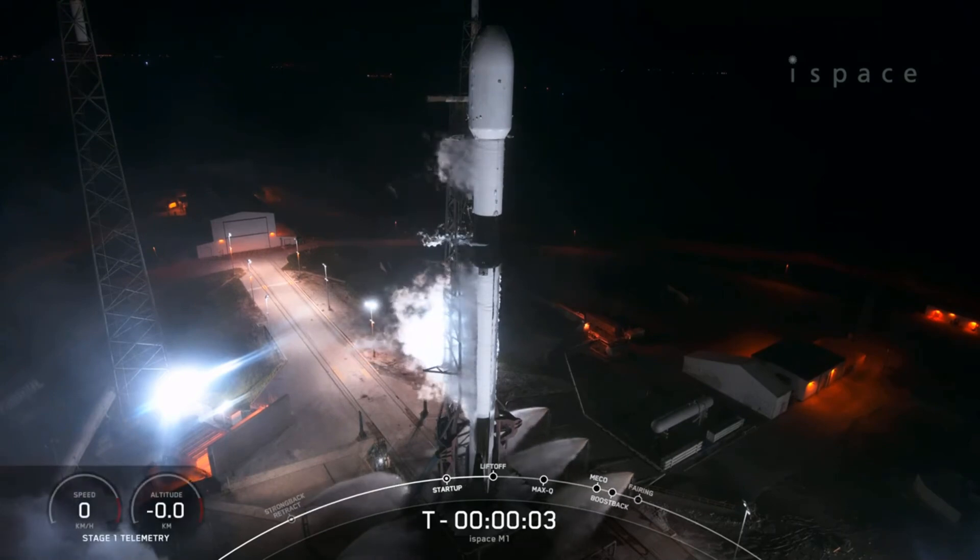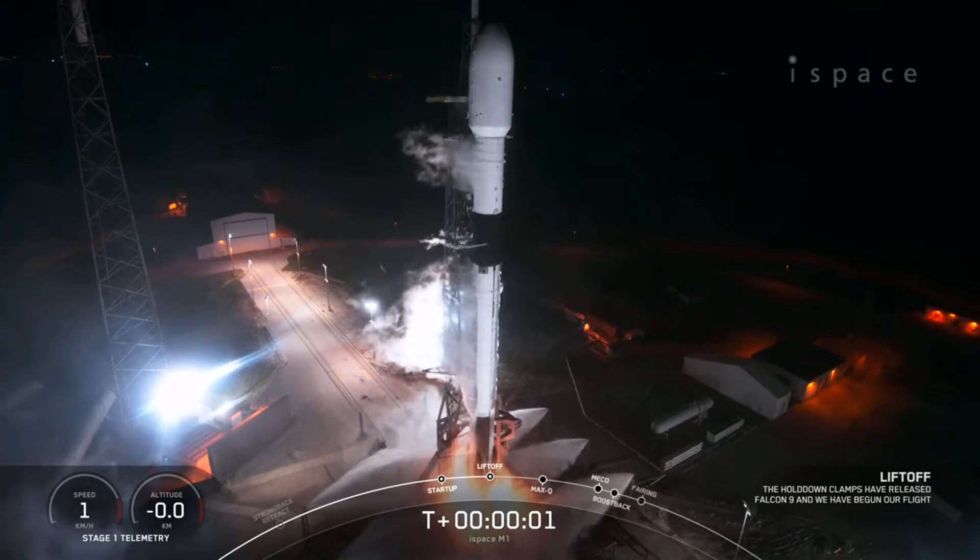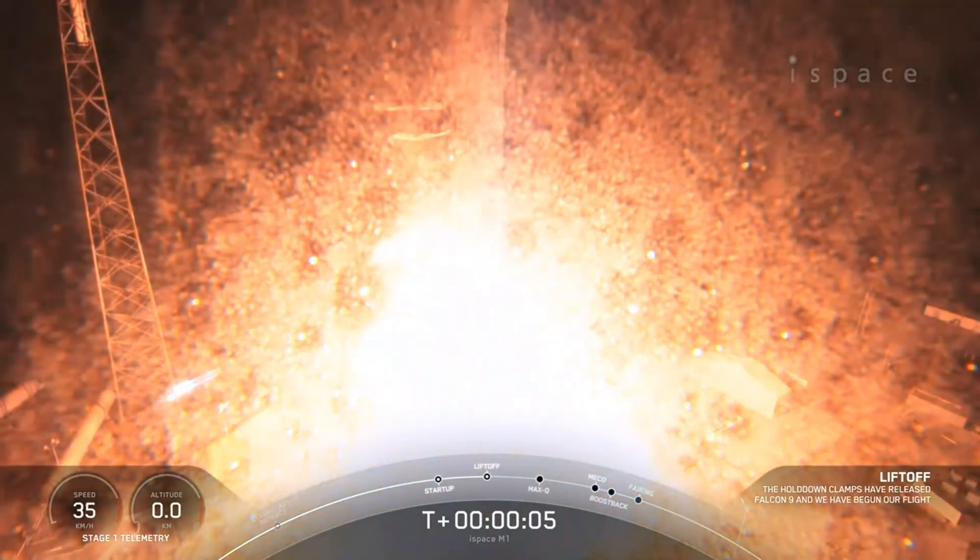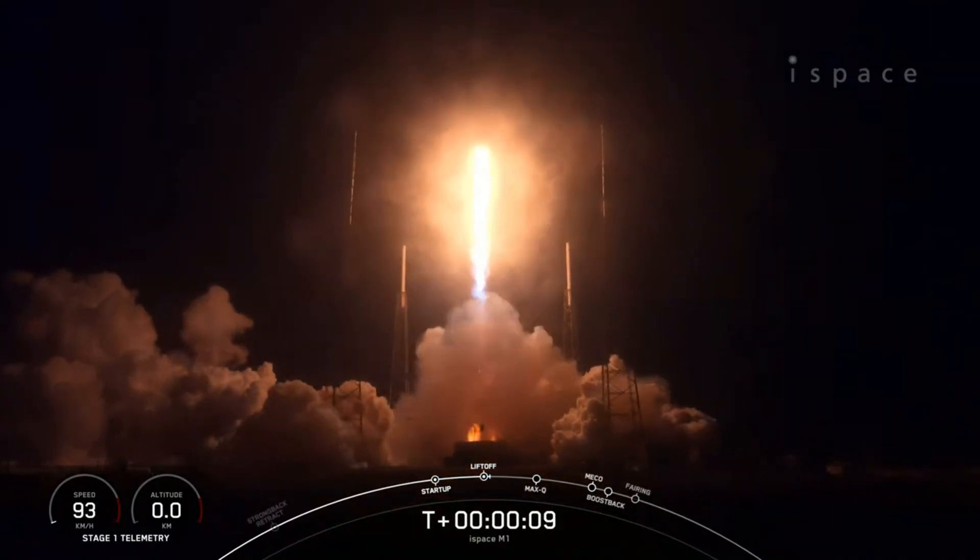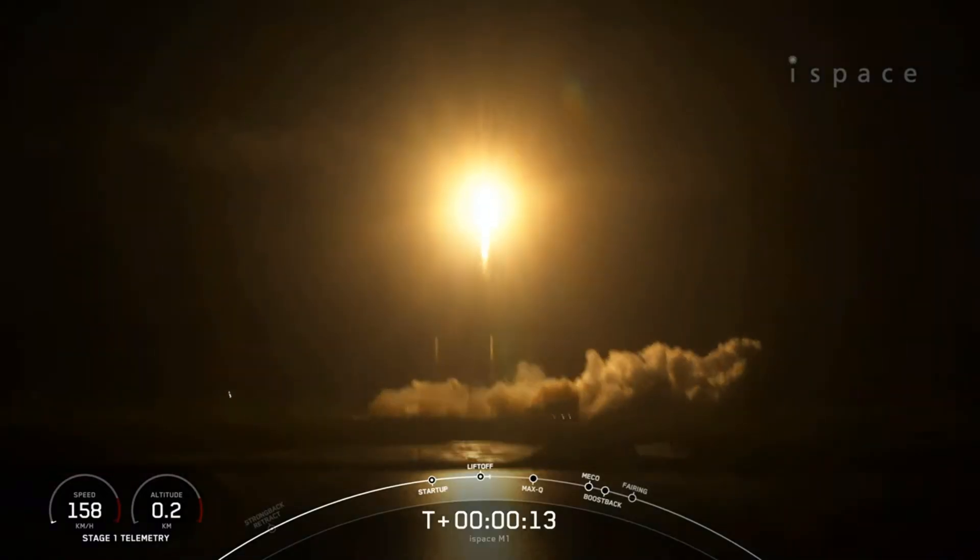Hello, it's Scott Manley here. Even as Artemis 1 was on its way back from the moon, another mission was launching, carrying a set of payloads which would eventually make their way to the moon. This was the I-Space lander carrying the Hakuto-R rover, and there's also NASA's lunar flashlight mission.